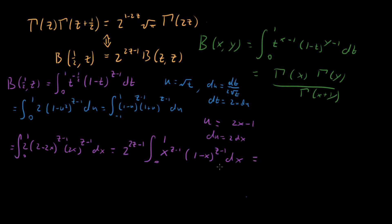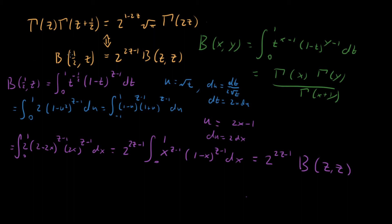This integral is exactly the definition of the beta function with both arguments equal to z. So this whole expression equals two to the two z minus one times beta of z comma z — and we've proven the beta function property. The last thing to do is show that this property returns the Legendre duplication formula when we substitute gamma functions.